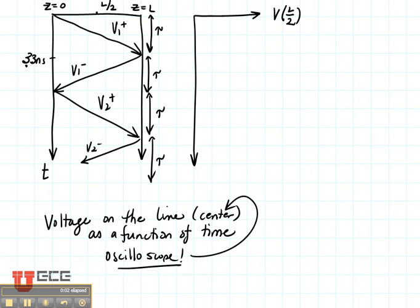Now what we were preparing to find was the voltage on the line at its center point as a function of time. This is like putting an oscilloscope on the center of the line and seeing what we can see as a function of time. The way we calculate this or observe it from the bounce diagram is to draw a dashed line at the location that we are interested in.